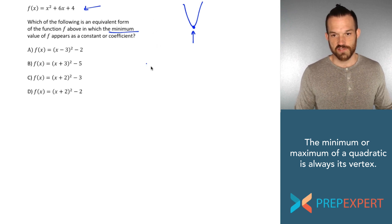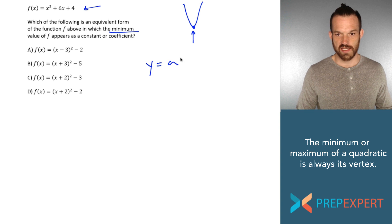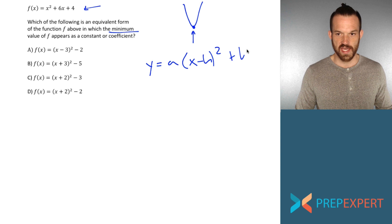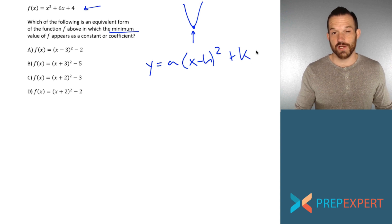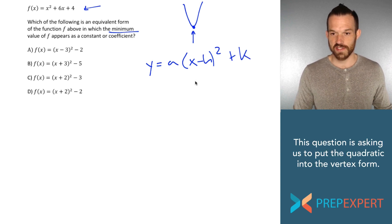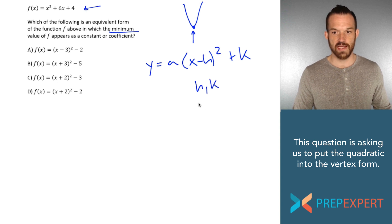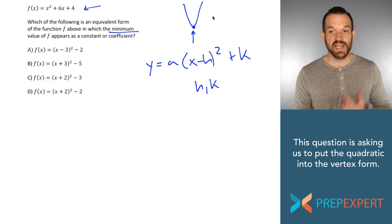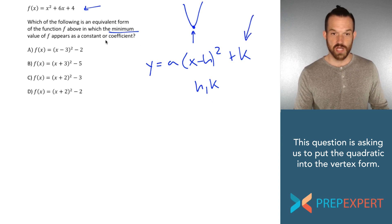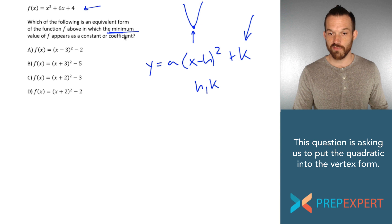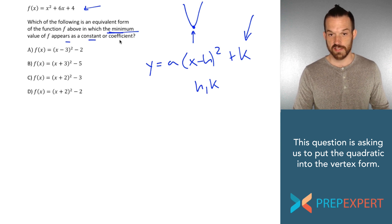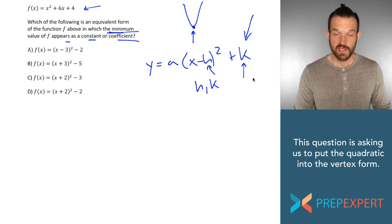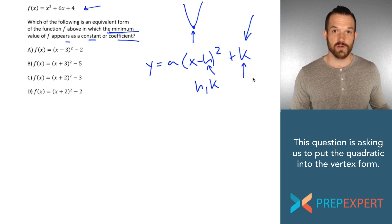If you're familiar with the vertex form of a quadratic equation, it looks like this: y equals a onto x minus h quantity squared plus k. And if you can get a quadratic into this form, it's really easy to see what the vertex is. The vertex is just h, k. The x coordinate of the vertex is h, the y coordinate of the vertex is k. So as you can see, that is a form of the quadratic equation in which the minimum value or the vertex appears as a constant or coefficient, with h and k both being constants.